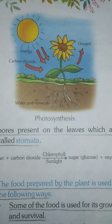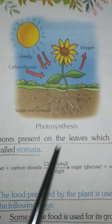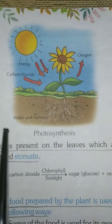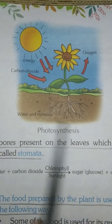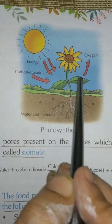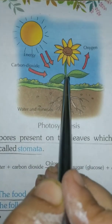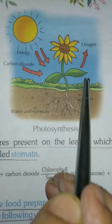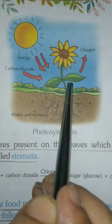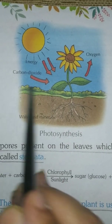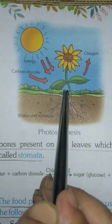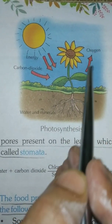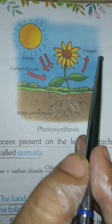First, write photosynthesis. Draw roots — roots absorb water and minerals from the soil. Draw green colored leaves. Leaves take in carbon dioxide and give out oxygen. Who gives us heat and light? The sun. The process by which green plants make their food in the presence of air, water, and sunlight is called photosynthesis.